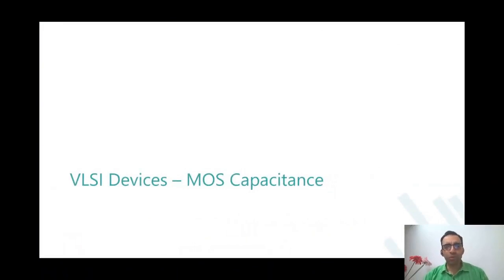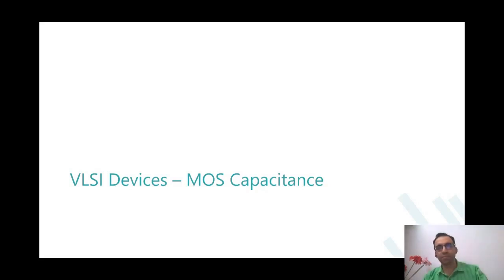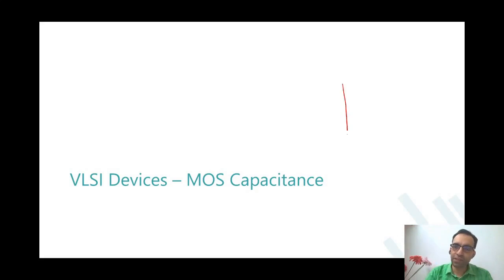So, what is a MOS capacitance? What does MOS stand for? Metal Oxide Semiconductor. Metal Oxide Semiconductor. So what you are essentially saying is that there is a metal, there is a semiconductor, and in between them there is an oxide.